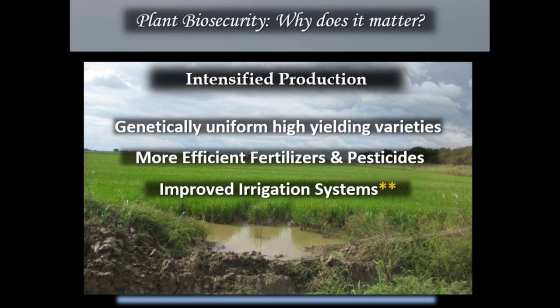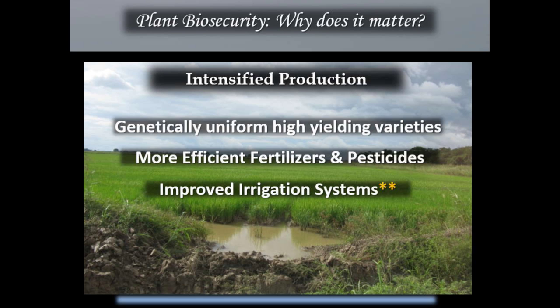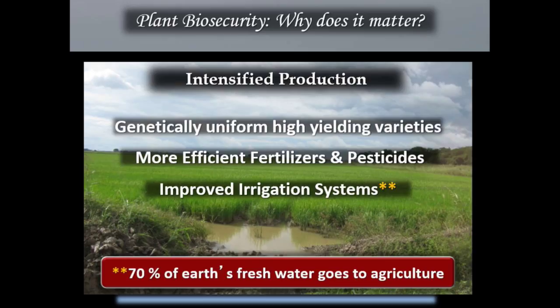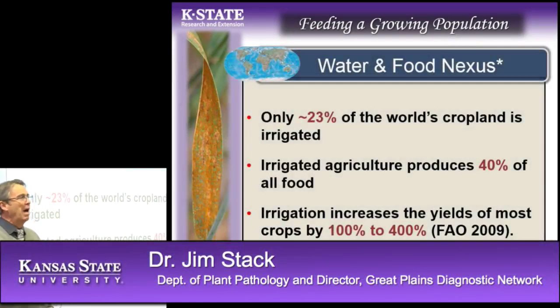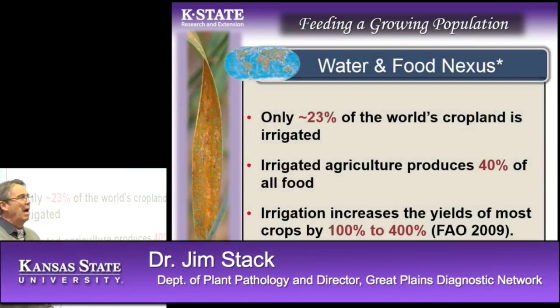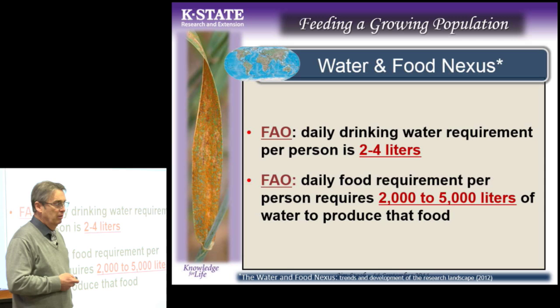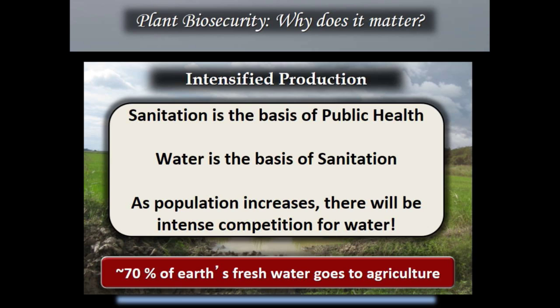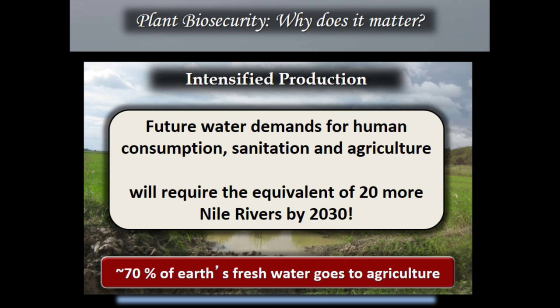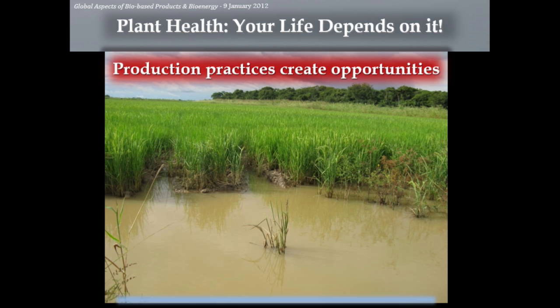There's almost no scenario under which irrigation is not going to be important in feeding 9 billion people. The daily drinking water requirement per person is 2 to 4 liters, but for their food it's between 2,000 and 5,000 liters. We're adding 2 billion more people to the planet. Water is the basis of sanitation, and as population increases there will be intense competition for water. Future water demands for human consumption, sanitation, and agriculture will require the equivalent of 20 more Nile rivers by 2030.